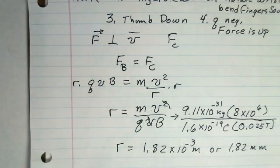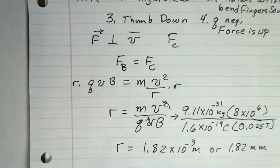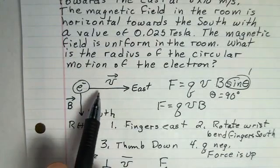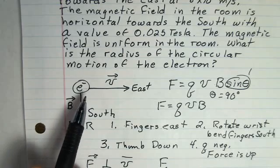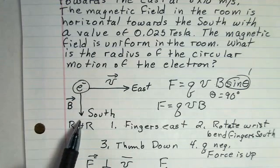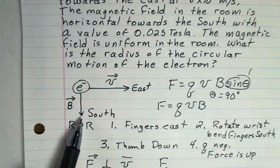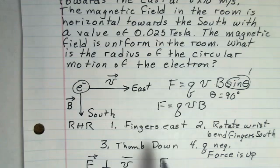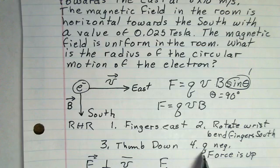The electron is light, fairly easy to make it move in a small circle to change direction. So that's an example of analysis of right-hand rule. That told us we put our fingers in the east direction, rotated our wrist, bent fingers in the south direction when our thumb was pointed down. Because the charge was negative, we had to reverse our conclusion. The force is directed upward.